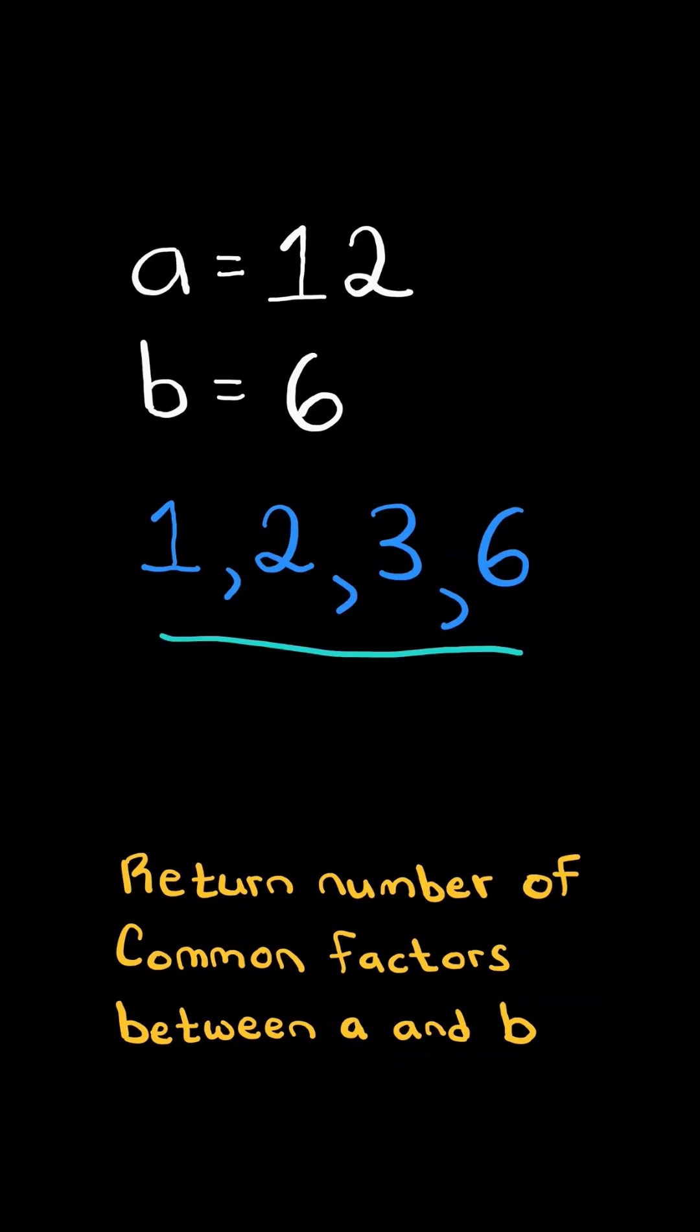For example, 1, 2, 3, and 6 divides both a and b, so we return the number of common factors 4.